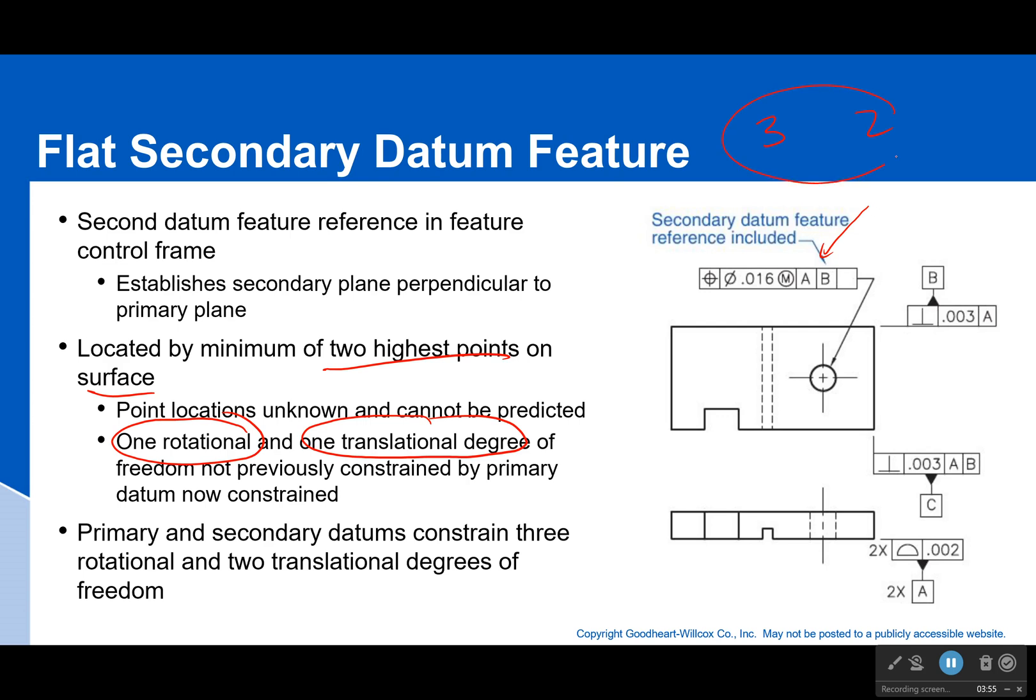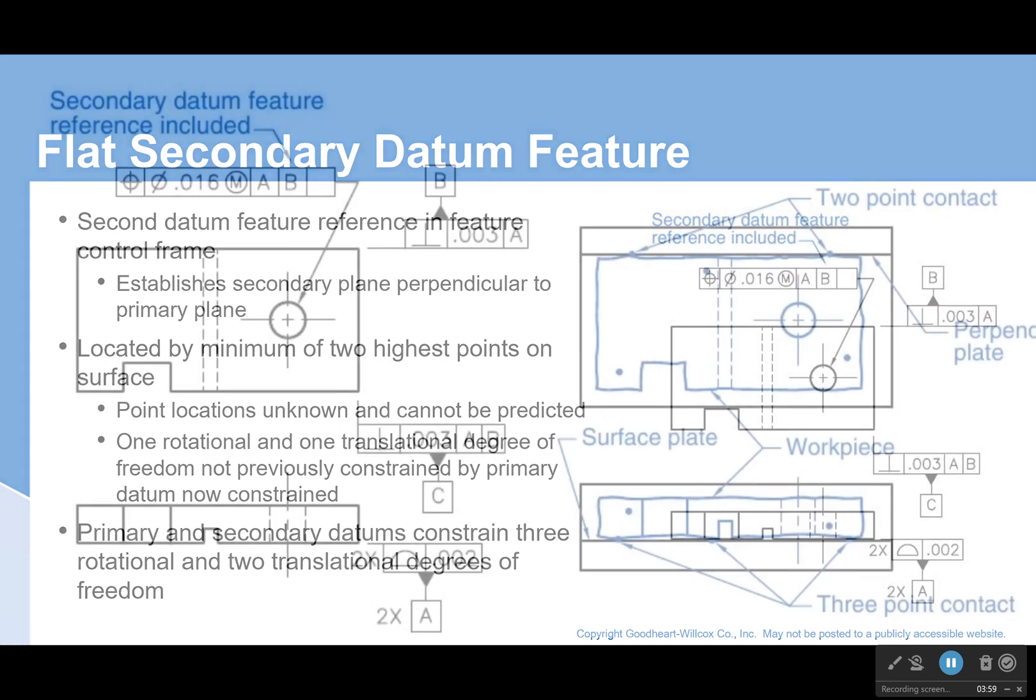Translational degree of freedom is going to be the one that's not been previously constrained by my primary datum. So with this, I've constrained five degrees of freedom. There's only one more. And I'll be taken in by our third datum.